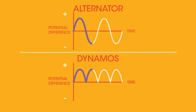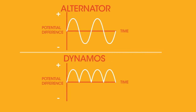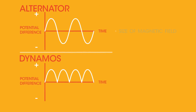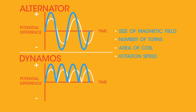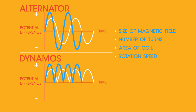This is what one complete rotation looks like on each potential difference graph. Let's finish by quickly looking at how these graphs can change. If we increase the size of the magnetic field, then the size of the current increases. This also happens if we increase the number of turns on the coil, or the area of the coil. And if we increase the rotation speed of the coil, then we increase both the size and the frequency of the current.